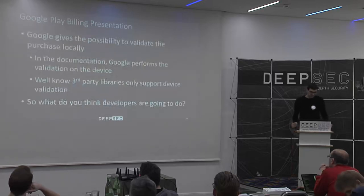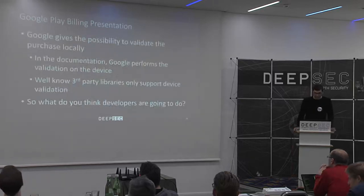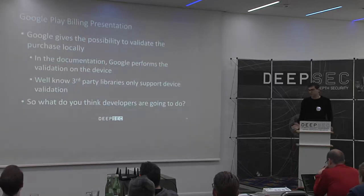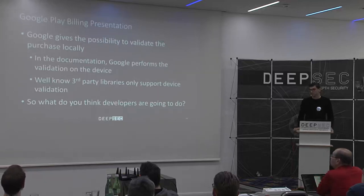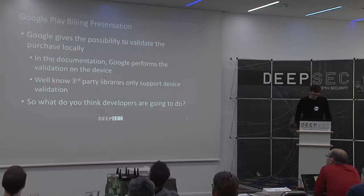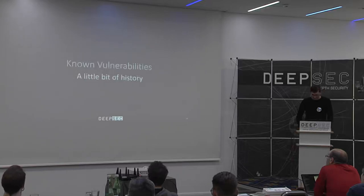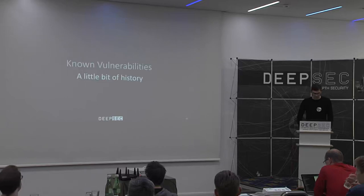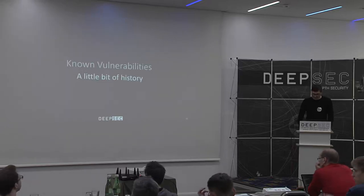So basically: Google gives the possibility to validate the purchase locally; in the documentation the validation is performed locally; and well-known third parties used on Android only support device validation. The question is: what do you think developers are going to do? Before looking at the results, let's talk about some known vulnerabilities already found on the Google Play Billing API.